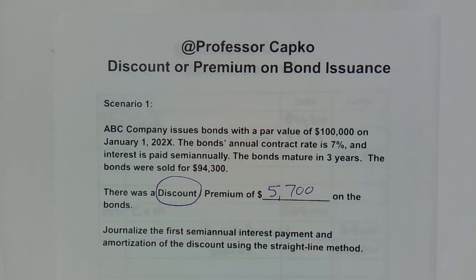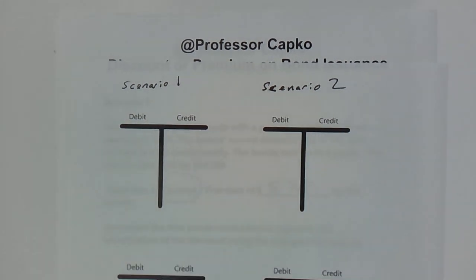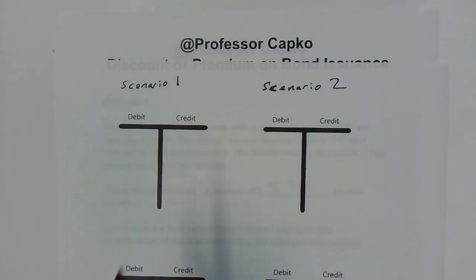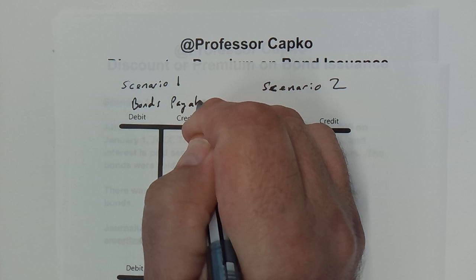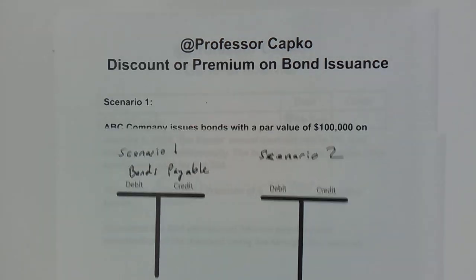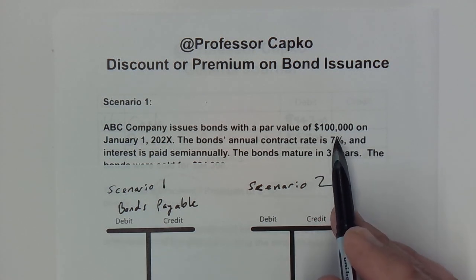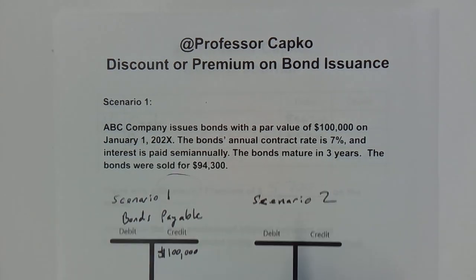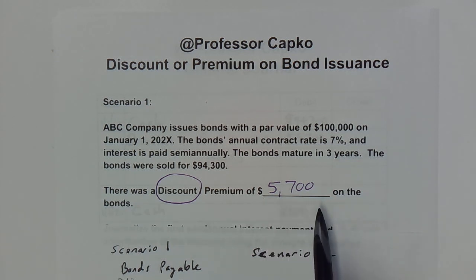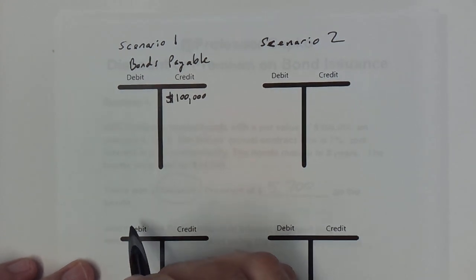Let's take a look at what that looks like with T-charts. This is all going to be on the liability side of the balance sheet. We have bonds payable and we're always going to record it for the full par value — the full face value. Because it's a payable, it is a liability, it's going to be on the credit side. So we're going to have a credit of $100,000.